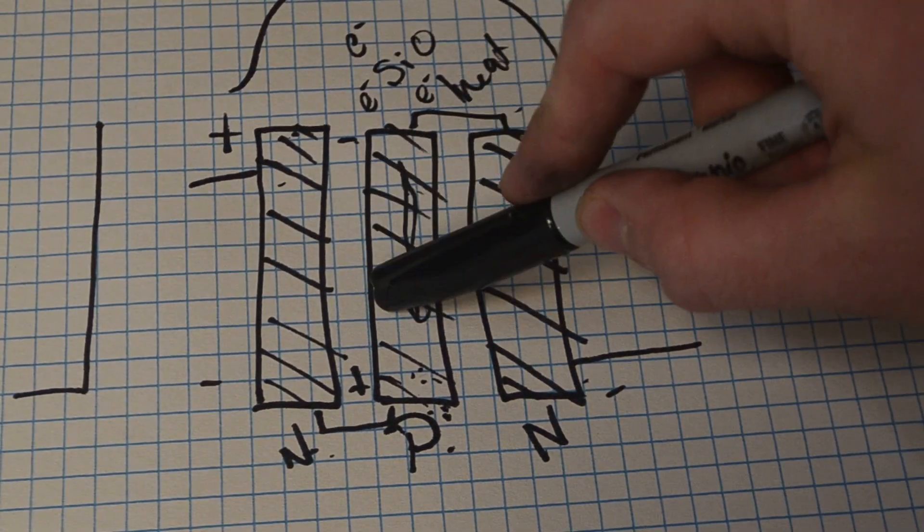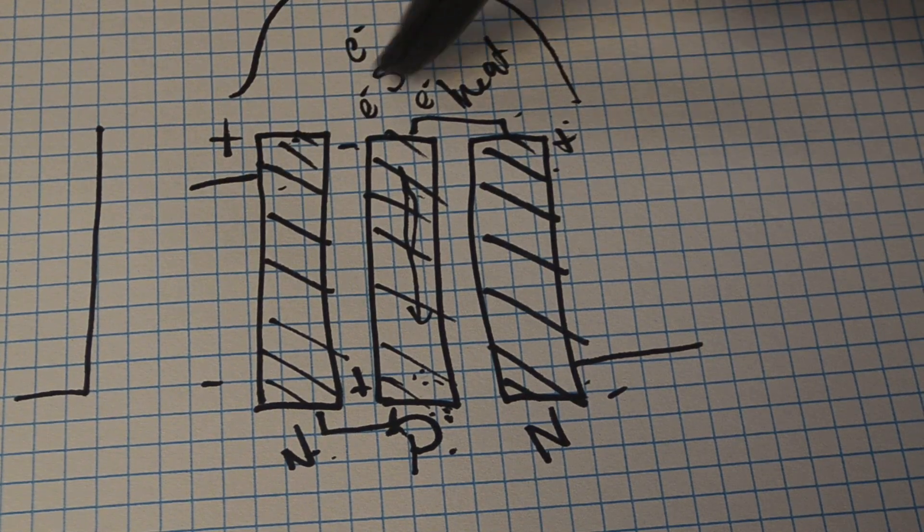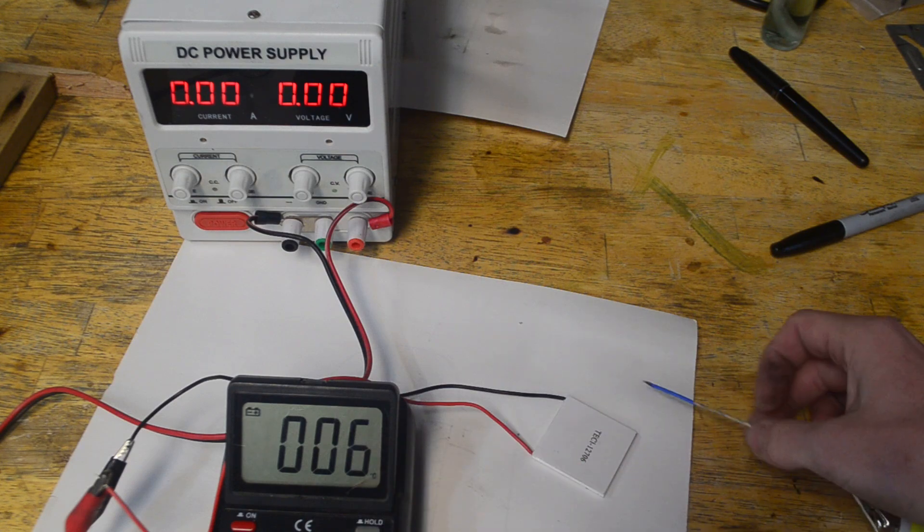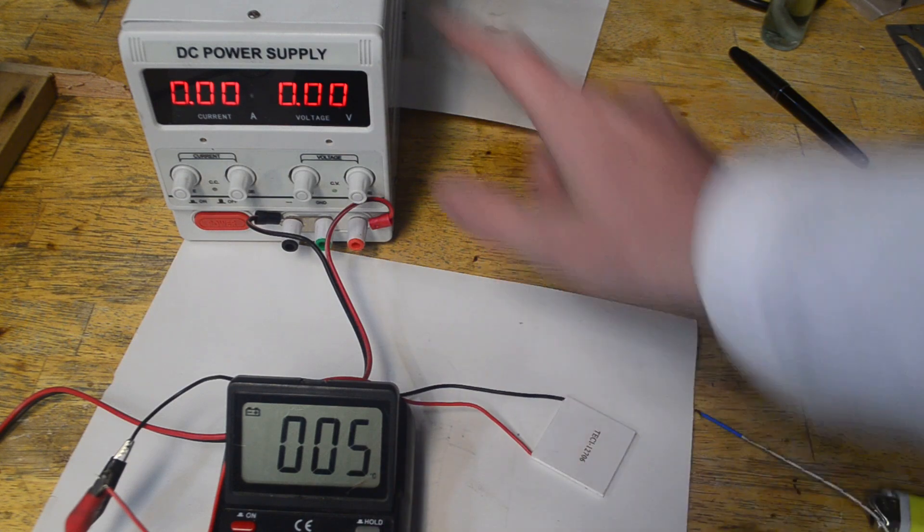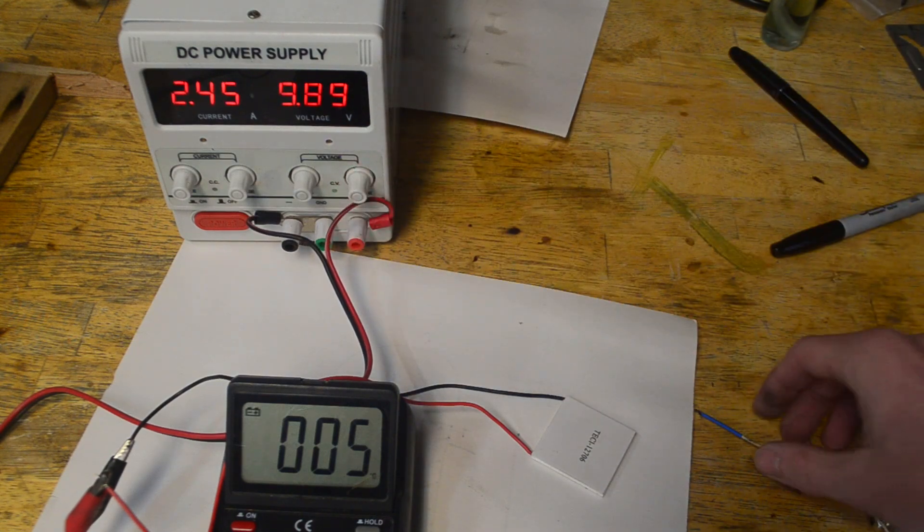Now just as most things, this process can be reversed. By that, what I mean is that if we give this setup electricity, one side of it will get hot and one side will get cold. Here to demonstrate, I have my multimeter set to the temperature reading mode with this as the probe, and I have this Peltier module connected up to this DC power source. Let's go ahead and crank up the voltage on this a bit and we'll see what temperature it gets to.